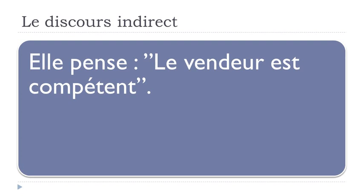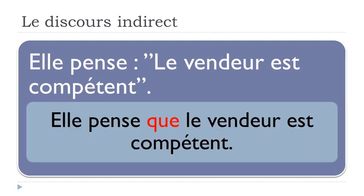For example: elle pense — penser is 'to think', she thinks — le vendeur est compétent, the seller is competent. If you want to combine these two sentences into one, you get elle pense que le vendeur est compétent. It doesn't change that much — you only need to add que and remove the quotation marks. Remember that que becomes qu' before a vowel.